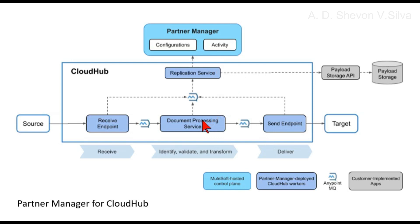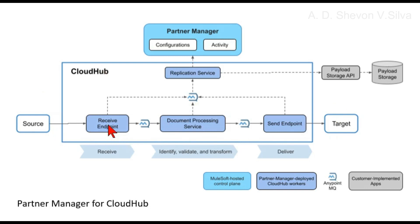The queues are generated in the same or nearest available region. Any new runtime application deploys to the same region as the first deployment. Here you can see the source is connected to the receive endpoint, replication service, receiver endpoint, and document processing service. The send endpoints and MQs are in Cloud Hub. The receiver endpoint is connected to Anypoint MQ, and Anypoint MQ is connected to the document processing service.